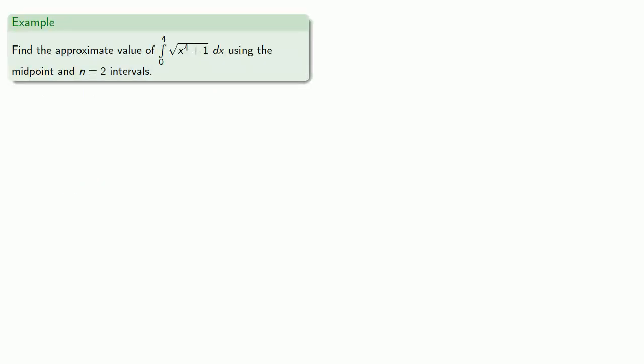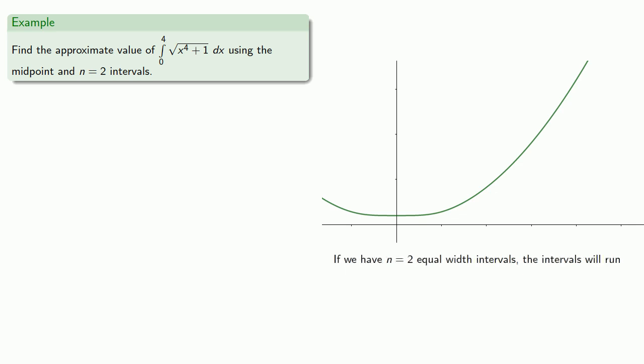So let's find the approximate value of the integral of sqrt(x^2 + 1) dx and we'll use the midpoint and n equals 2 intervals. So let's go ahead and graph this. If we have n equals 2 equal width intervals, the intervals will run from x equals 0 to x equals 2 and from x equals 2 to x equals 4.